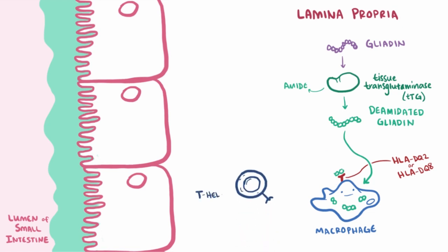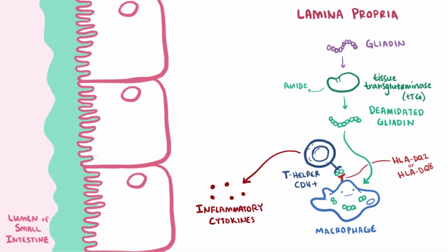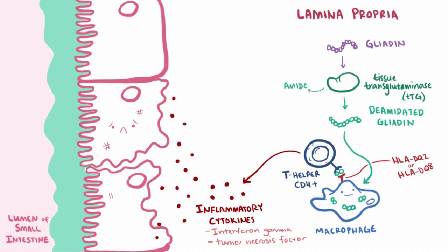And the T helper cells, also known as CD4 plus T cells, from the immune system that recognize the gliadin zoom over and are like, yup, I'll take it from here. And they release inflammatory cytokines, which are molecules that initiate inflammation, like interferon gamma and tumor necrosis factor, which can directly damage and destroy epithelial cells in the villi of the small intestine.